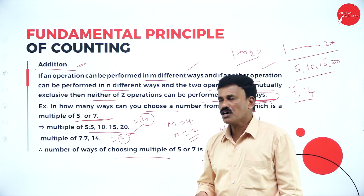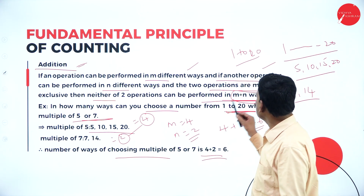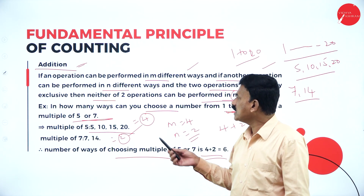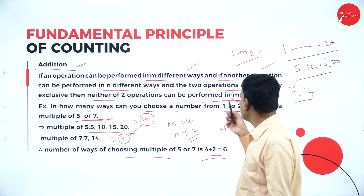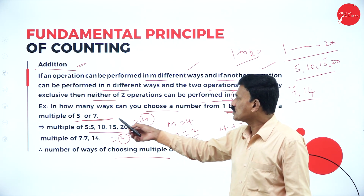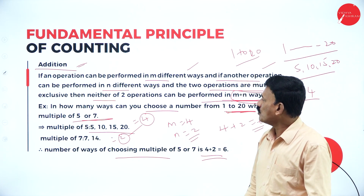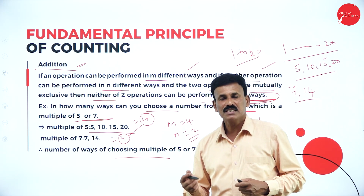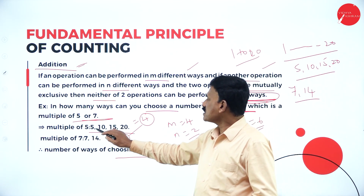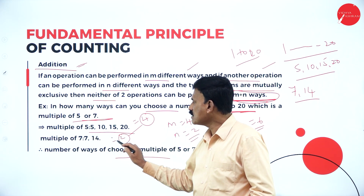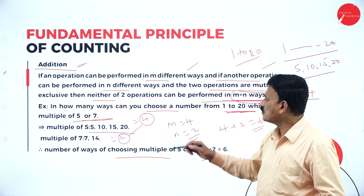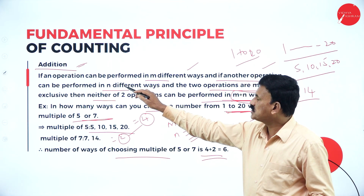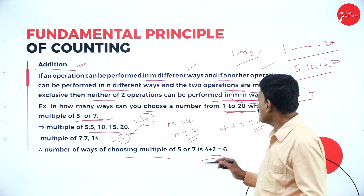If an operation is performed in M different ways and another operation is performed in N different ways, and the two operations are mutually exclusive, then either of the two operations can be performed in M plus N ways. So here the multiples of 5 are 5, 10, 15, and 20, and the multiples of 7 are 7 and 14. Therefore M is 4 and N is 2, and according to the fundamental principle of addition this can be done in 4 plus 2 equal to 6 ways.